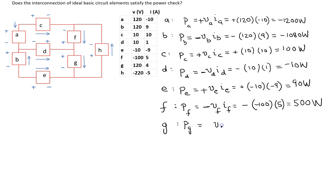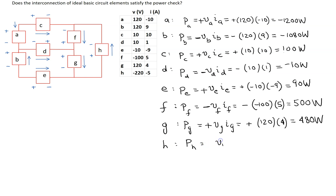For element G, substituting the values with a plus sign gives a positive answer. So element G, like elements C, E, and F, is absorbing power. For the final element H, power is P_H = V_H × I_H. For element H, the reference current is entering the terminal marked positive, so we use a positive sign. Substituting the values gives 1100 watts, so element H is also absorbing power.